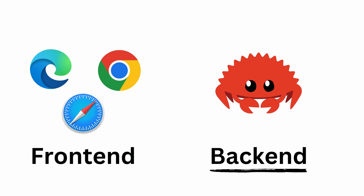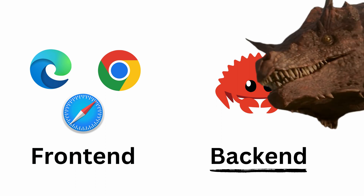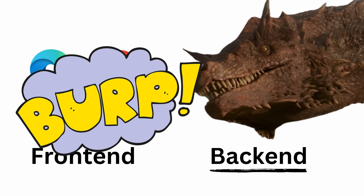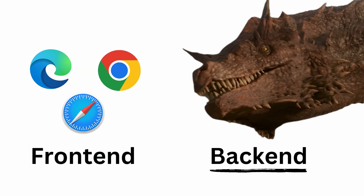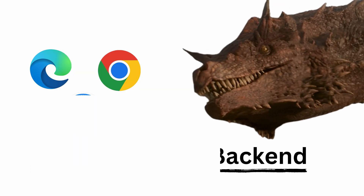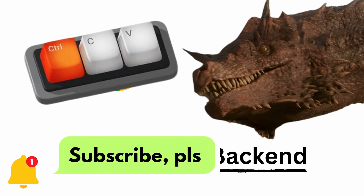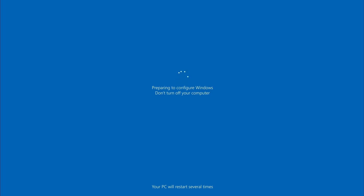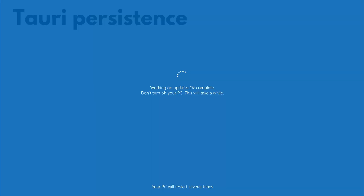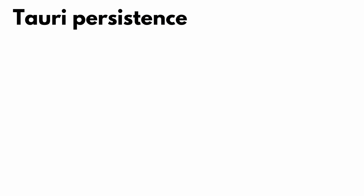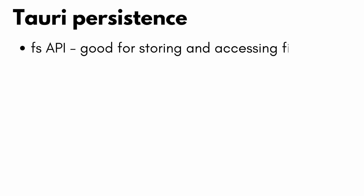Even if we can't or don't want to write Rust code, Tauri comes with a lot of useful stuff already written and packaged into APIs and plugins. Some of the available APIs include notifications, clipboard access, or even a full-on update manager. We are mostly interested in access to the file system to save some stuff, and yes, it is one of the available APIs.